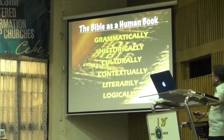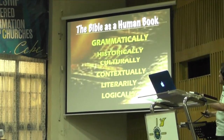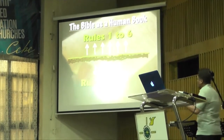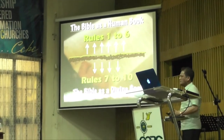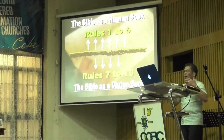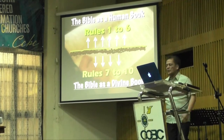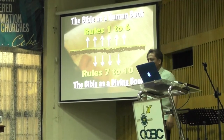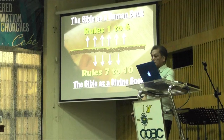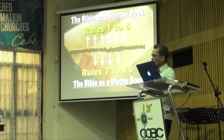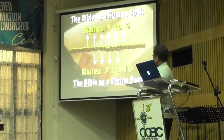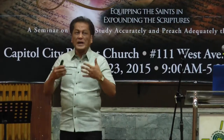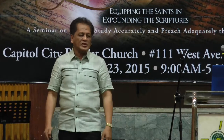And then the ones that are below the ground — these are our personal convictions about the Bible. This is why we believe the Bible is the Word of God. The last four — this is conviction, below the ground. You don't see this, but this is what makes us believe the Bible indeed is the Word of God.